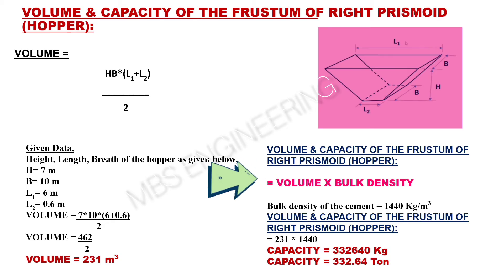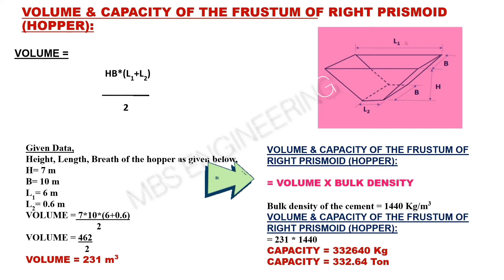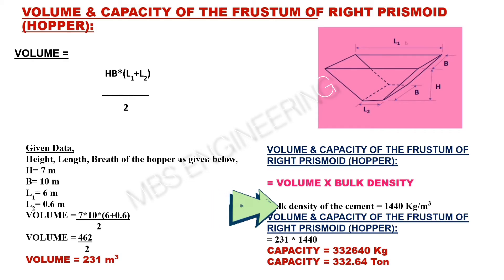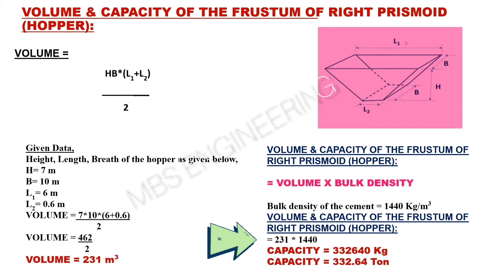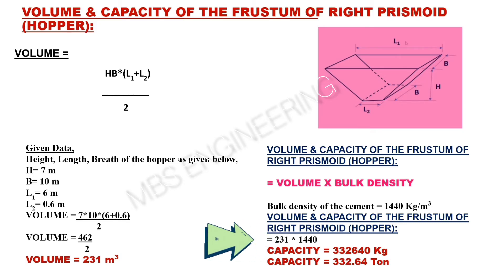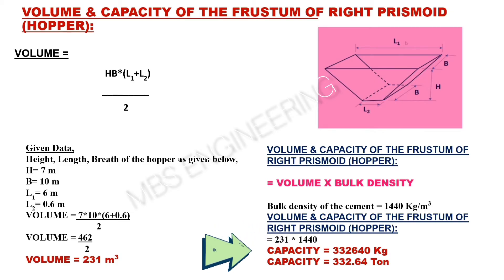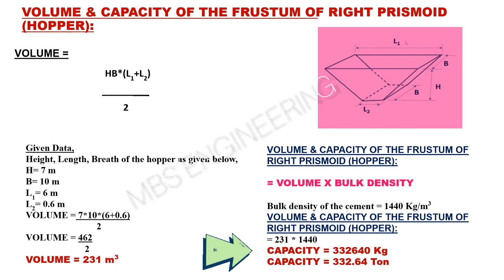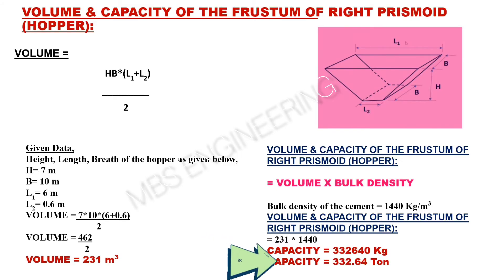Next, the capacity of the frustum of right prismoid or hopper: volume multiplied by bulk density. Assuming the bulk density of cement is 1,440 kilograms per cubic meter, the frustum of right prismoid or hopper has a capacity of 3,32,640 kilograms, or 332.64 tons.